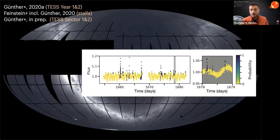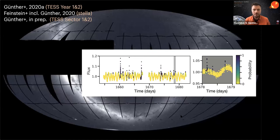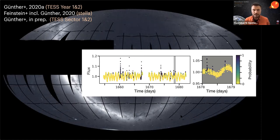In this example, we use STELLA on a TESS light curve of a very fast variable young M-dwarf. Despite all the intrinsic variability, STELLA robustly picks out the flares and assigns probabilities. Yellow parts indicate low flare probability; dark blue parts indicate STELLA is very confident a flare is present. Zooming into a shorter region showing fast modulation, you can see it picks out flares quite nicely.